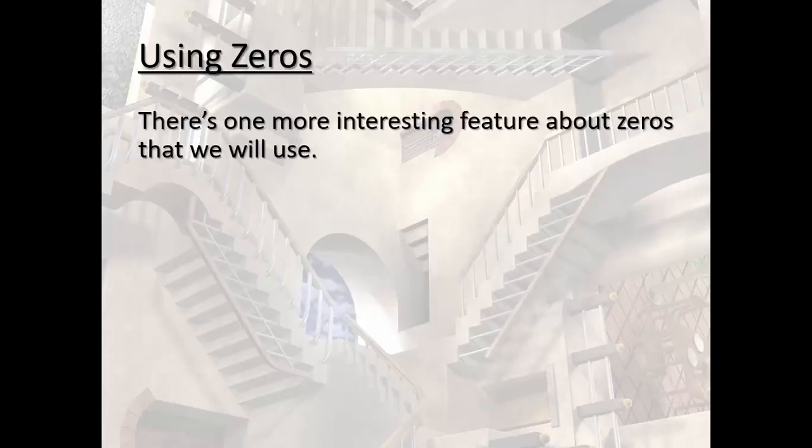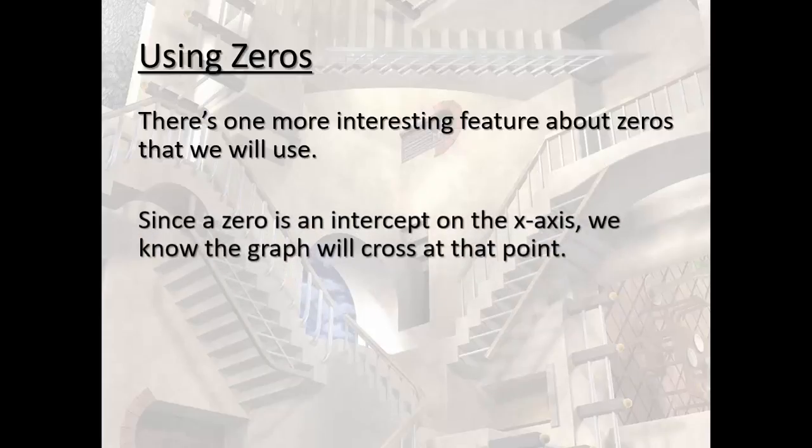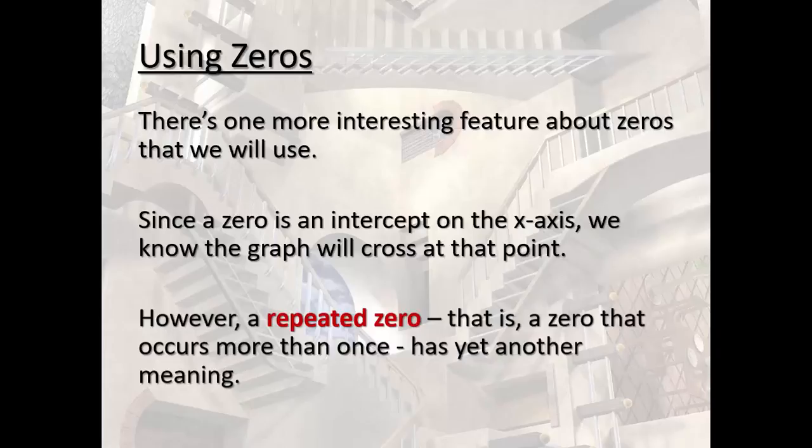Now, there's one more interesting feature about zeros that we're going to use, and that is since the zero is an intercept on the x-axis, we know that the graph is going to cross at that point. However, a repeated zero, and by that I mean a zero that occurs more than once, has yet another meaning.